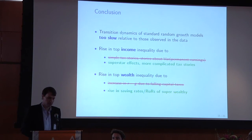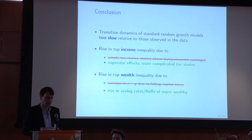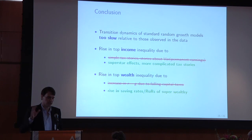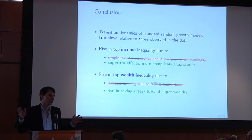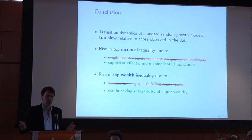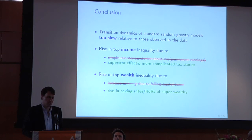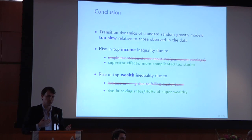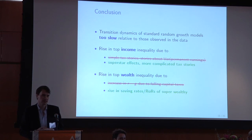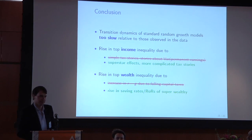To conclude: from a theoretical point of view, the main result is that transition dynamics in a large class of standard theories of top income and wealth inequality are an order of magnitude too slow relative to the data. We use these results to rule in a bunch of stories and rule out a bunch of stories. Thank you very much.